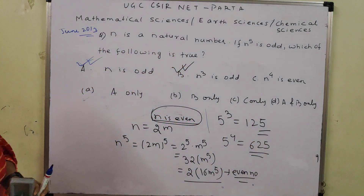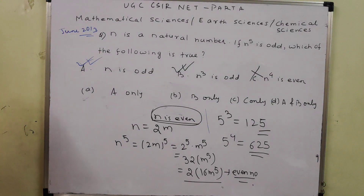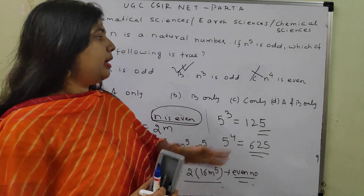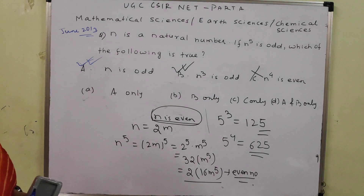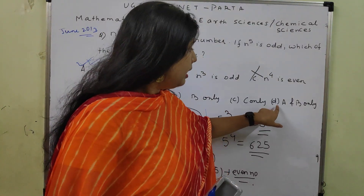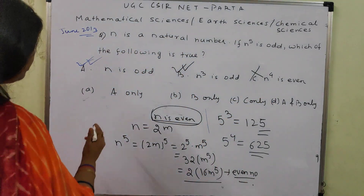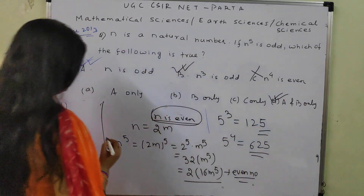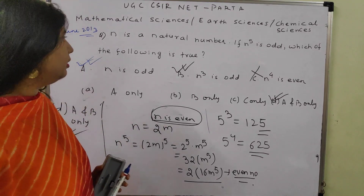If N is odd, then N to any power cannot be even. So option C is wrong. Both A and B are correct. The final answer is option D: A and B only.